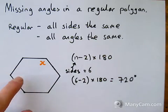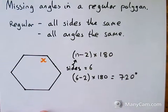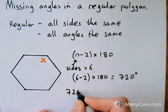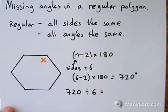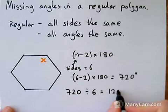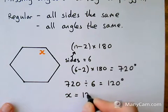I've got 6 angles in this shape, so I'm going to share 720 degrees equally between those 6. So I'm going to do 720 divided by 6, which gives me 120 degrees. So x equals 120 degrees.